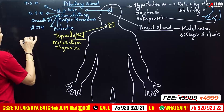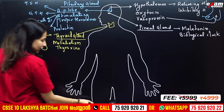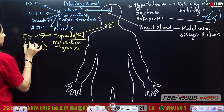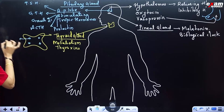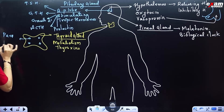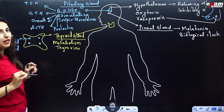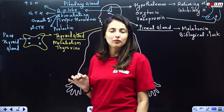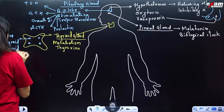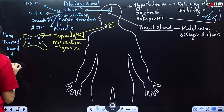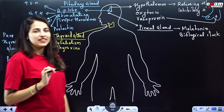The thyroid gland has two pairs of parathyroid glands. The parathyroid gland secretes a hormone called parathormone. The function of parathormone is to regulate calcium metabolism in the body.